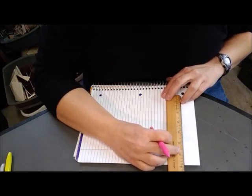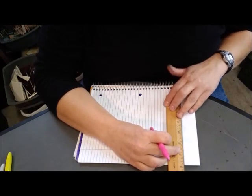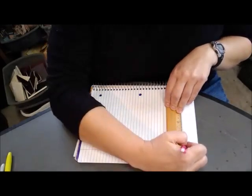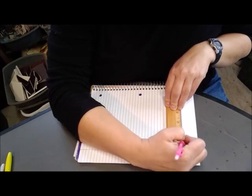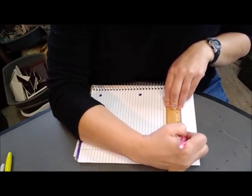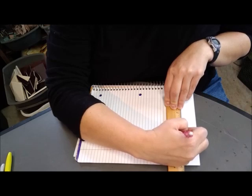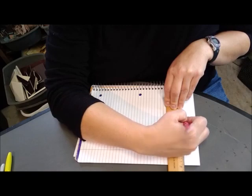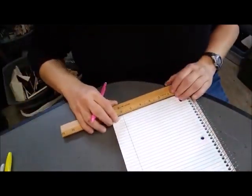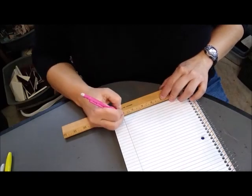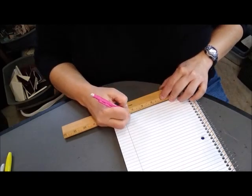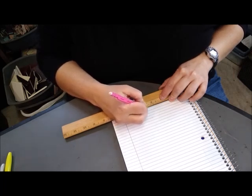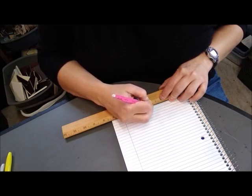You can take the ruler and for this college ruled notebook, the width between the lines is about a quarter of an inch. So you can mark a quarter of an inch dots all the way across the top of your page and the bottom of the page to give you some guidelines to draw your straight lines. I'm just going to do a few to get you started, but you can continue this across the whole page to create your graph paper.